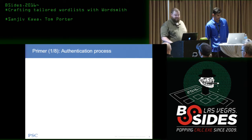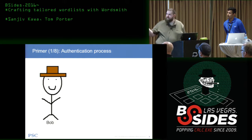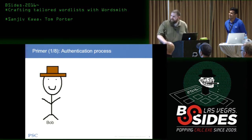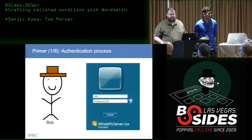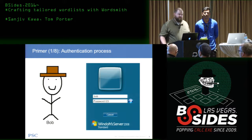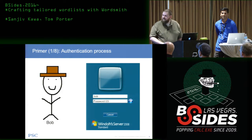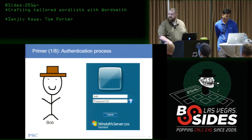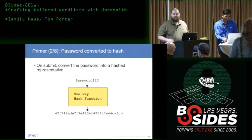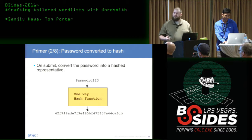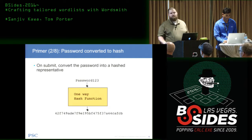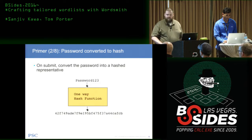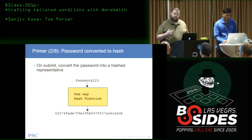Let's talk about a simple authentication process. This is Bob — the extent of my Microsoft Paint skills. Despite what Bob's prohibition style might suggest, Bob is a user in a Windows environment logging into a Windows host with username Bob, either locally on a workstation or remotely via RDP. We've unmasked the password field so you can see Bob's password is password123. On submit, that input is put into a one-way hash function, and the output is a fixed-length character string — what we call a hash. This is a one-way function; we can't reverse it.